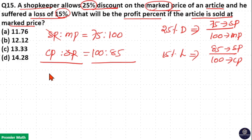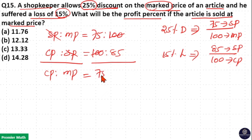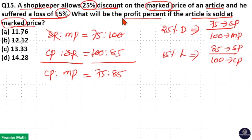Now I will get the cost price to marked price ratio. The 100s cancel, so 75 to 85 is the cost price to marked price ratio. And the question asks: when the article is sold at the marked price, we need to find out the profit percentage.